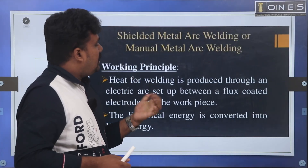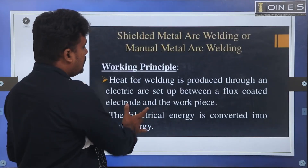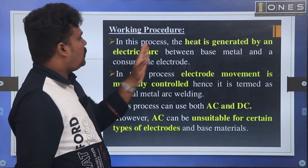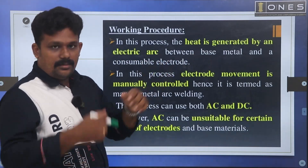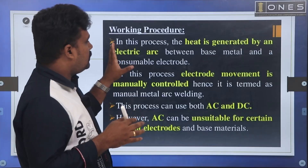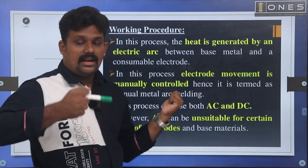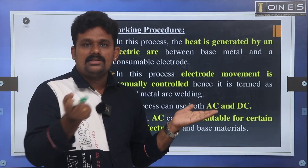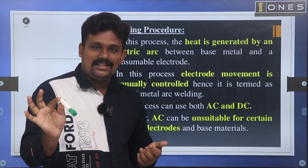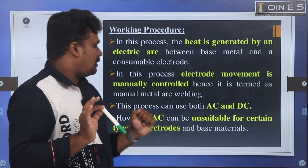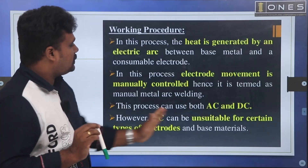In shielded metal arc welding, the electrode is coated. Electric energy is converted into heat energy. This process is generated by an electric arc using a metal electrode. The arc produces coalescence and the electrode is manually controlled. This process uses AC and DC current.